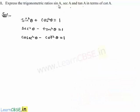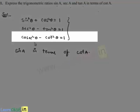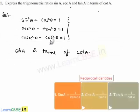Let us initially consider the conversion of sine a in terms of cot a. In order to convert sine a in terms of cot a, let us consider the identity which suits this conversion easily. If we observe the third identity, we have the identity in terms of cosecant and cot, so it is easy to convert cosecant into sine using the formula cosecant θ = 1/sin θ.